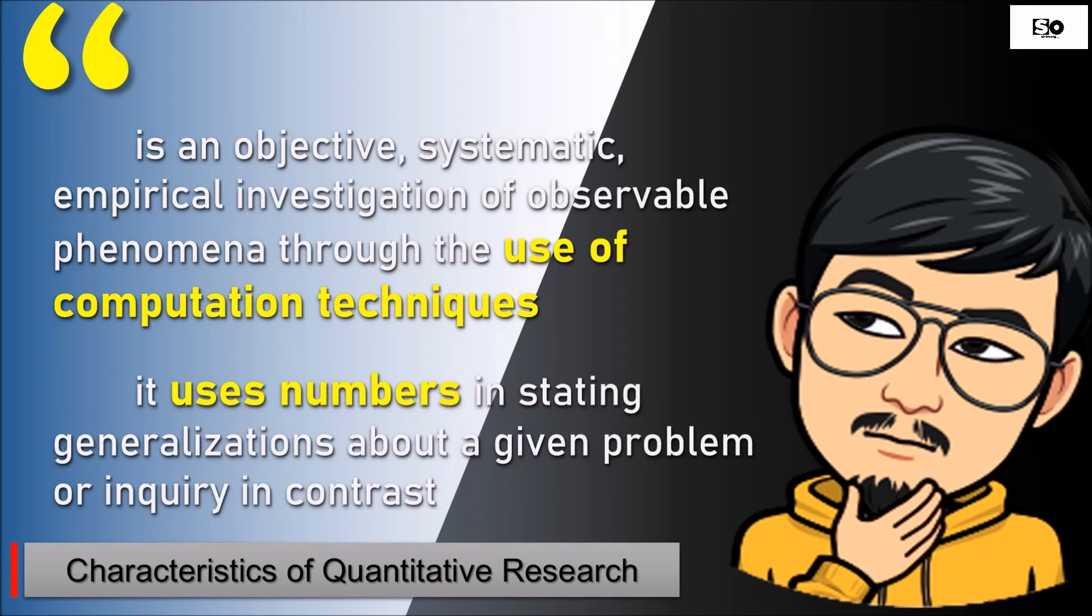Second, it uses numbers in stating generalizations about a given problem or inquiry. In Practical Research 1, we used data through interviews. Now in Practical Research 2, we'll gather data through questionnaires. Through this, we'll obtain numerical data which will be the basis for answers to our chosen problem.